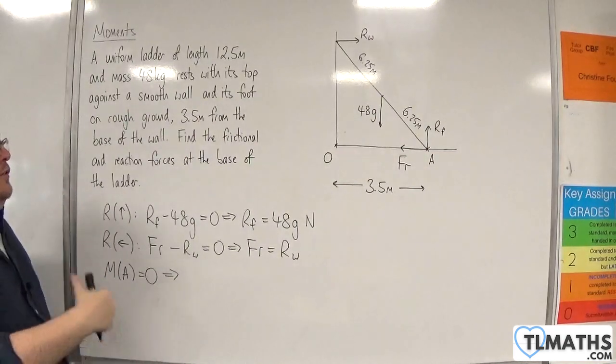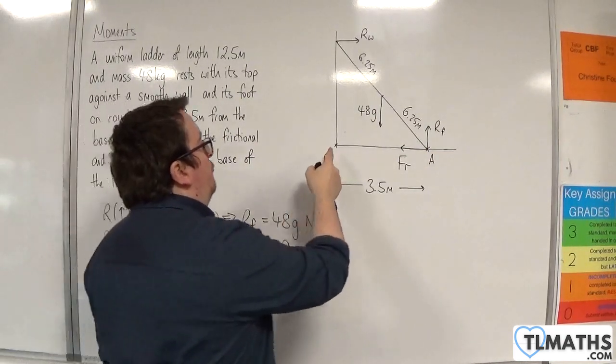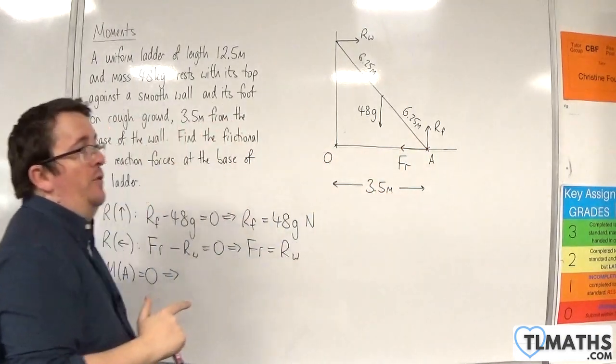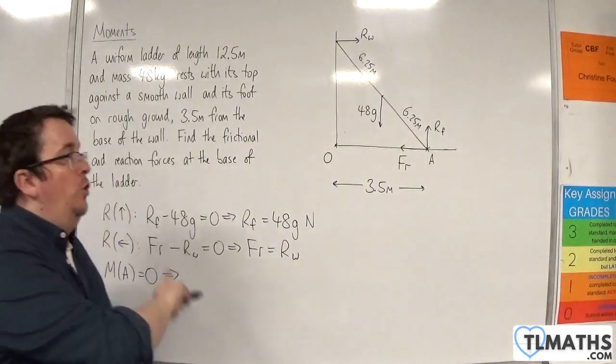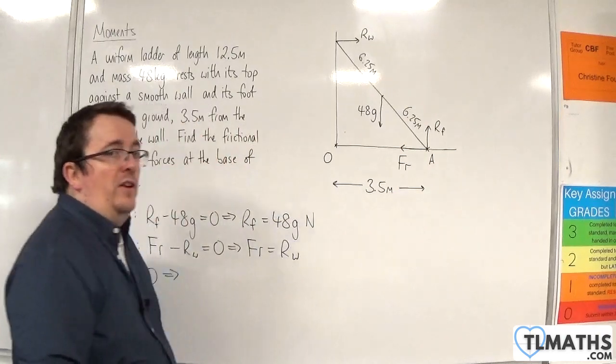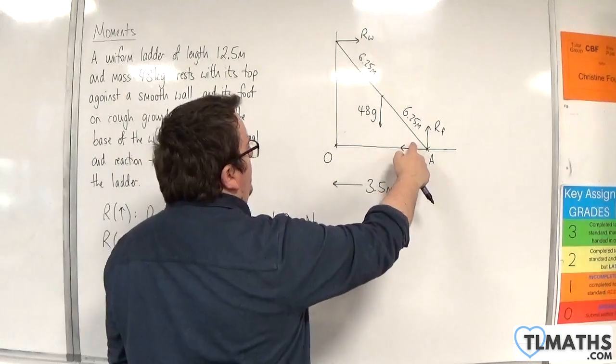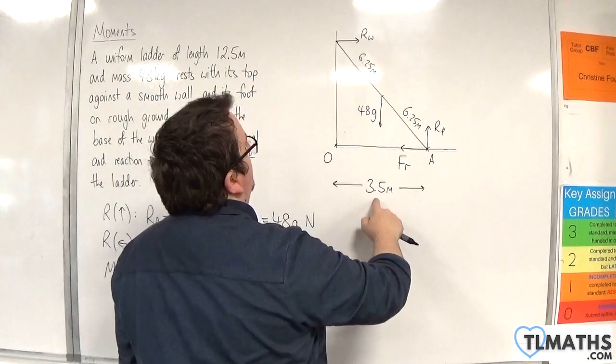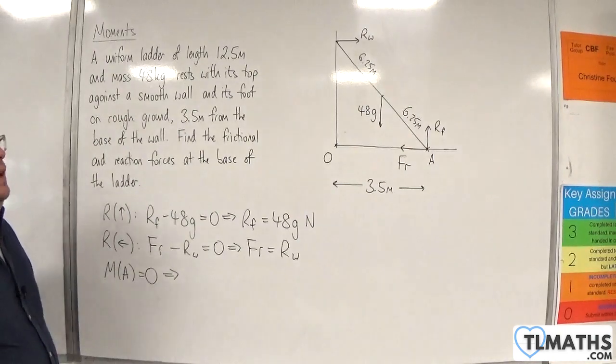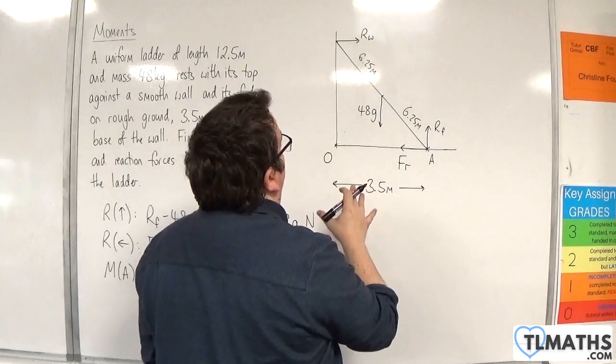However, I was given the information of how long the ladder was, and the distance from the wall to the base, which was 3.5m. So you could, throughout this problem, work out that angle fairly easily using a bit of trig. So cosine of the angle must be equal to 3.5 over 12.5, and then you could work with that angle.